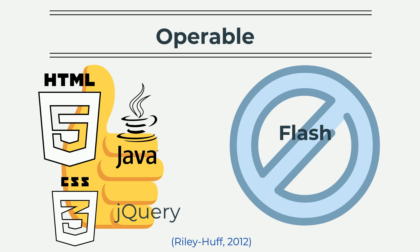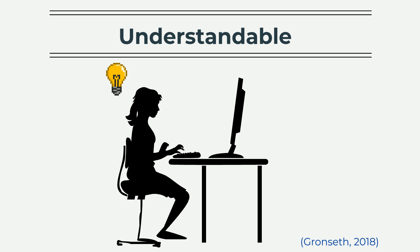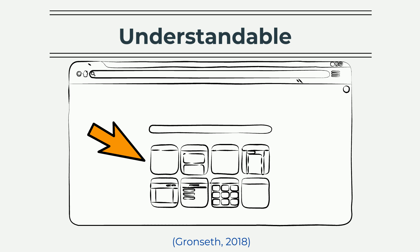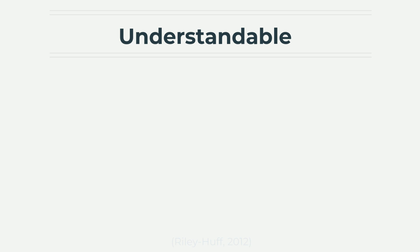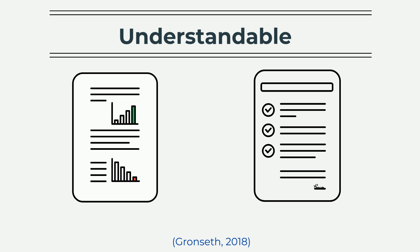For a website to be understandable, users need to be able to understand and comprehend the navigation features and text. Users should easily understand how to navigate from one section of the website to the next. Text information should be chunked or use bullets, and the writing should be free from unknown vocabulary and abbreviations.